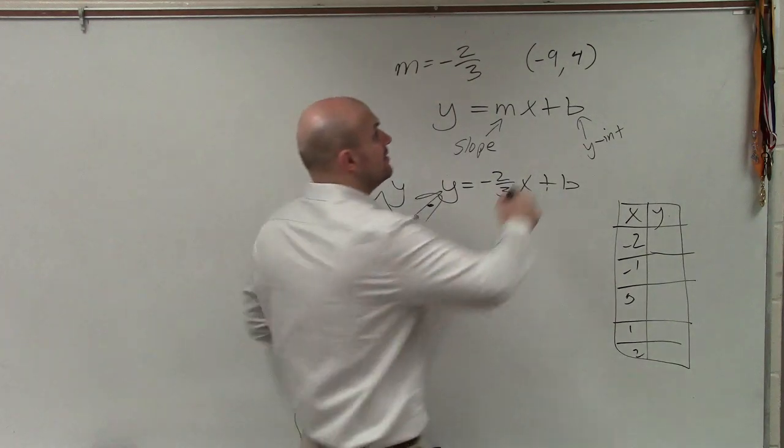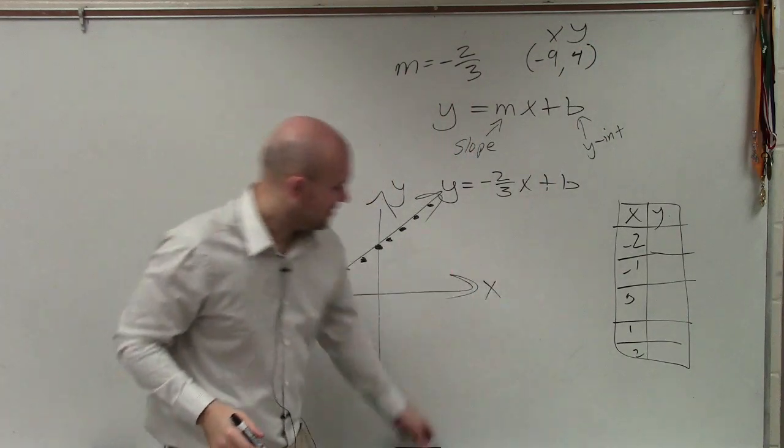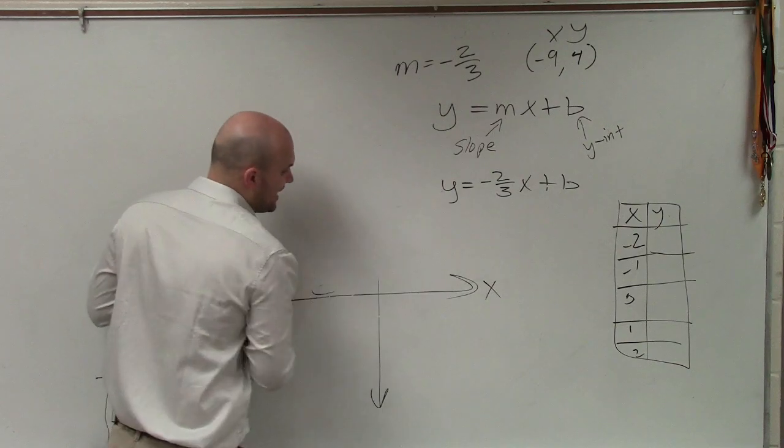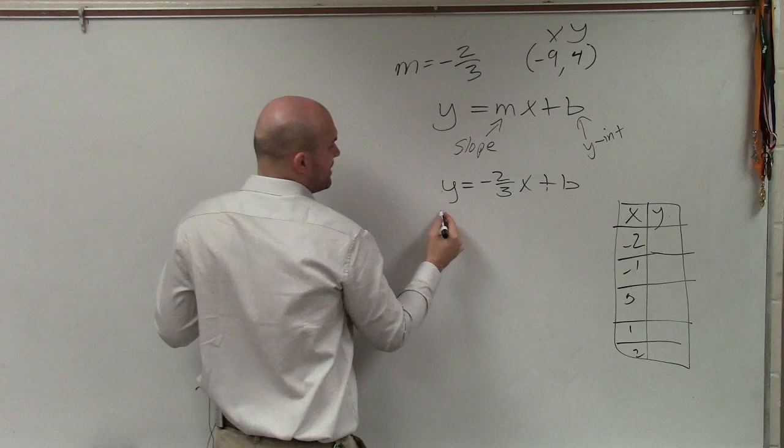What is that point? Negative nine. Yeah. So we have an x and a y-coordinate. So if I already know what slope is, and I need to solve for b, I can now plug this point in.